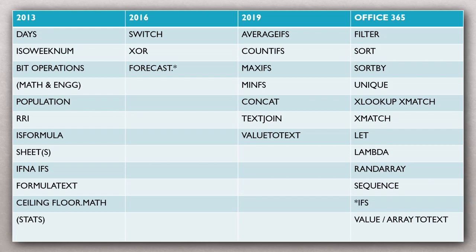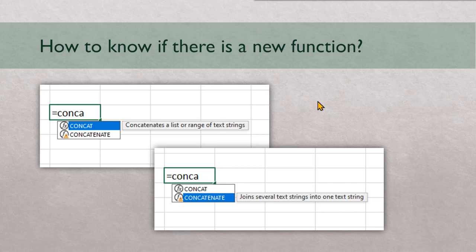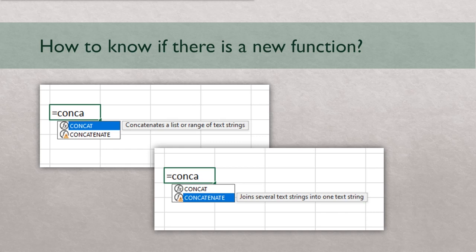Even while you are using the older functions, you generally get a chance — if there is an equivalent improved function which has been added — to use it. While you are typing the function, you come to know there is an exclamation mark warning sign, which generally means there is a better version of the function. It's in your interest to at least read the description to see what the difference is, explore the new function, understand the benefit, and if applicable, retrofit it into your existing work.